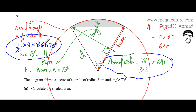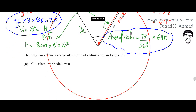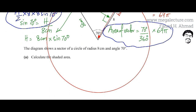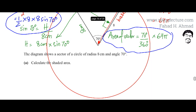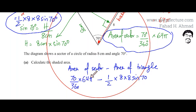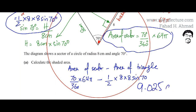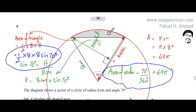The only thing left is to subtract the area of the triangle from the area of the sector to get the shaded area. So the final answer is 70 divided by 360 times 64 pi, minus half times 8 times 8 sine 70. The answer comes out to be 9.025 centimeters squared. That is the area of the shaded region.